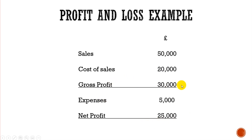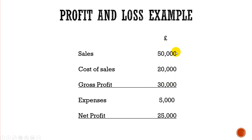If we want to show margin percentages, we work out net profit as a percentage of sales and gross profit as a percentage of sales. Looking at these figures, the net profit is 50% of sales, so the net margin is 50%, and the gross profit margin is 60%. That's the profit and loss statement. If you have any questions, leave them below or drop me an email — my details are on my website.